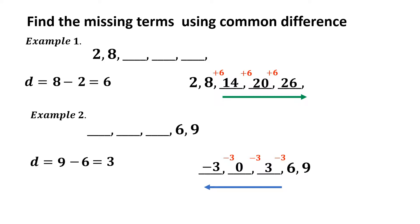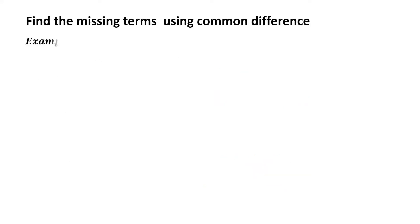Notice that in finding the missing terms of an arithmetic sequence: if it is towards the right direction, the common difference will be added; and if it is towards the left direction, the common difference will be subtracted. Example number 3: the given arithmetic sequence has three missing terms and the available terms are negative 5 and negative 2.